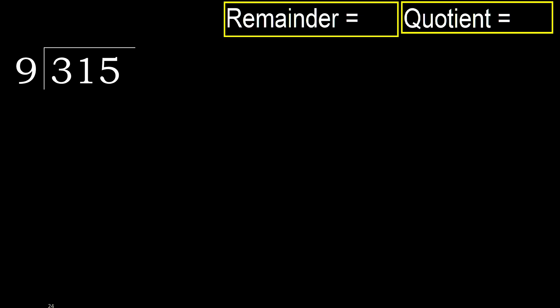315 divided by 9. 3 is less, therefore next. 31 is not less, therefore with 31.